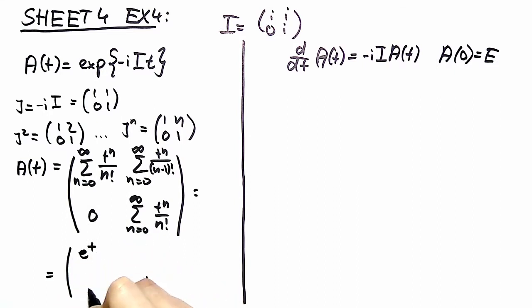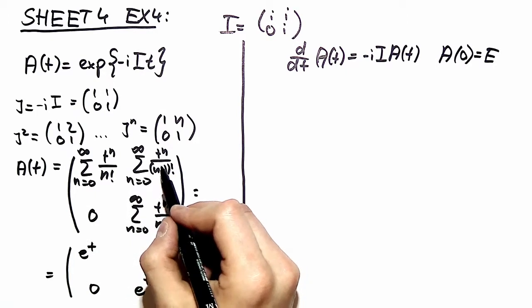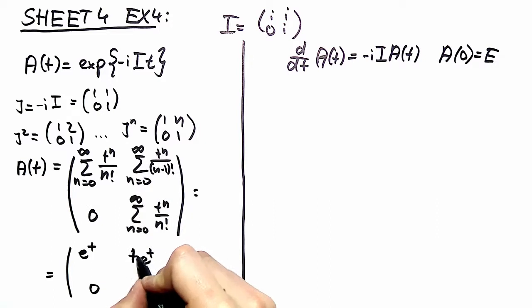You have t e to the t, e to the t, and 0. And in order to obtain an exponential function over here you have to relabel your variables and to do that you have to extract one t. That's it and this is the matrix representation of this generator.